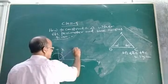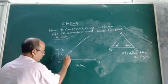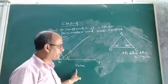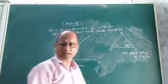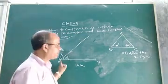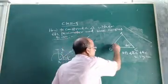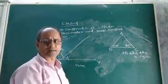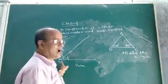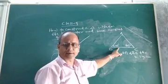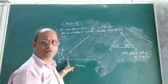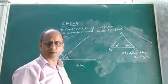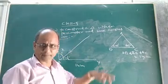Suppose this angle is 45 degrees, then you bisect this 45 degrees to get 22.5 degrees. After taking XY equal to 14 cm, which is the perimeter of the triangle, at vertex X you construct half of angle B, that is 22.5 degrees. First construct 90 degrees, then bisect to get 45, then bisect again to get 22.5 — which is half of angle B.